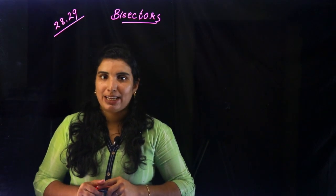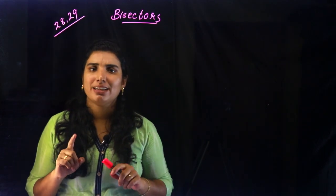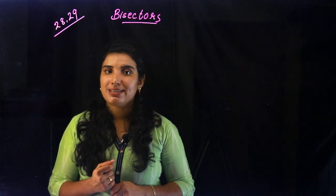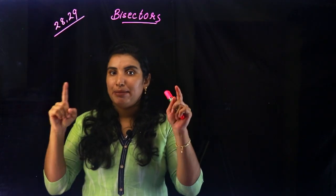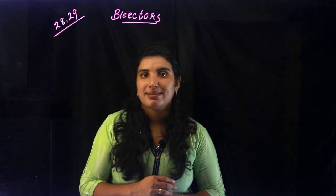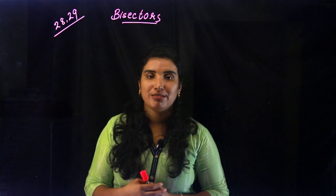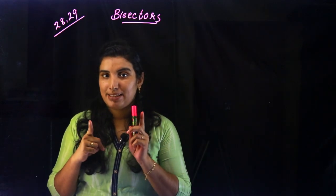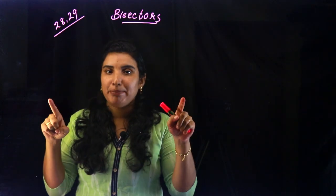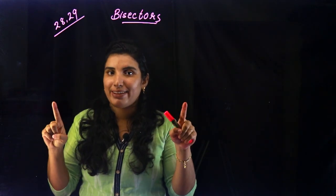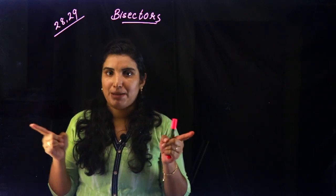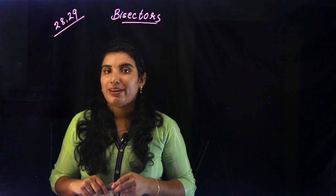We are going to draw a line AB. There is a line between A and B — 4 or 5 cm long. We are going to construct a perpendicular bisector. We will go to 90 degrees, and then go to 2.5 cm on the AB line.